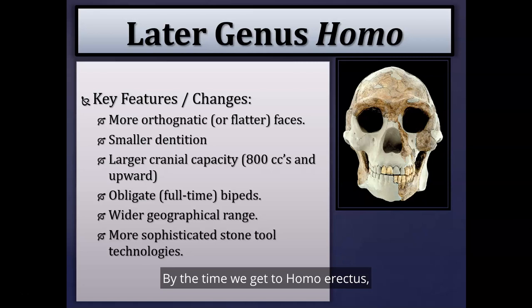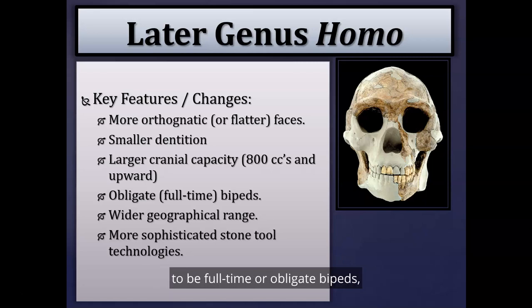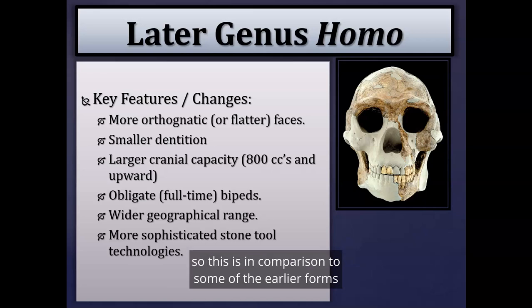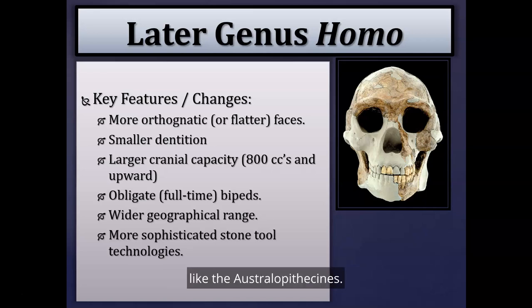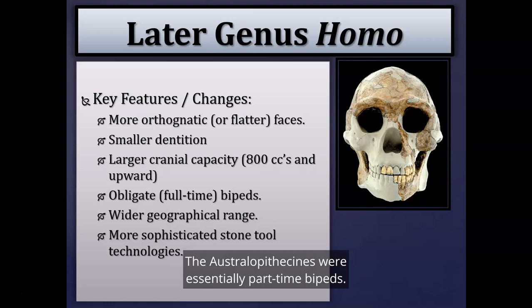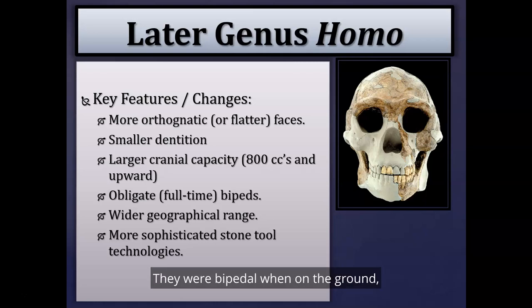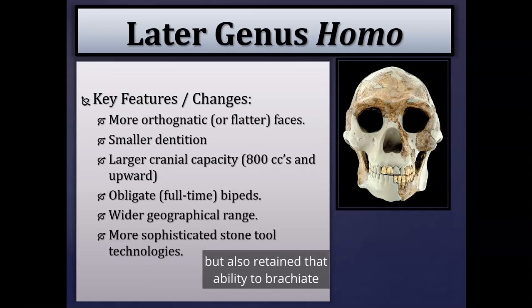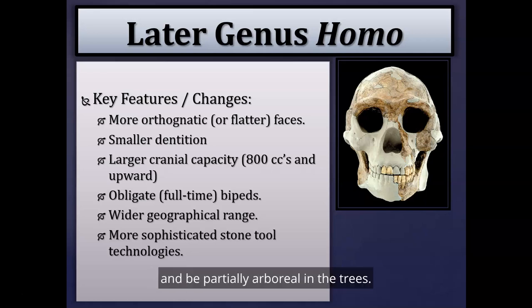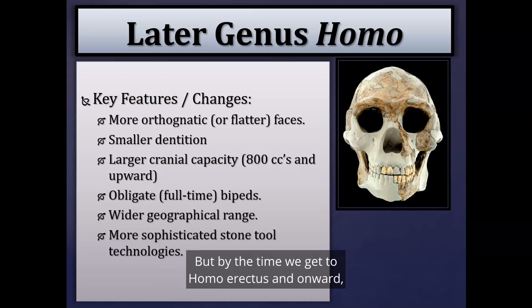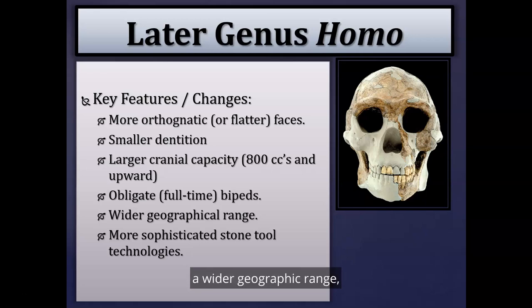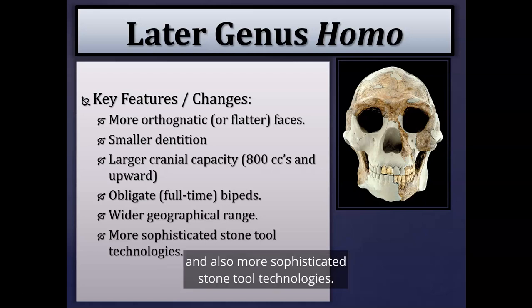By the time we get to Homo erectus, these fossils and onward are considered full-time or obligate bipeds, in contrast to the Australopithecines who were essentially part-time bipeds — bipedal on the ground but retaining the ability to brachiate and be partially arboreal. With Homo erectus and onward, we see a commitment to full-time bipedalism, a wider geographic range, migration out of Africa, and more sophisticated stone tool technologies.